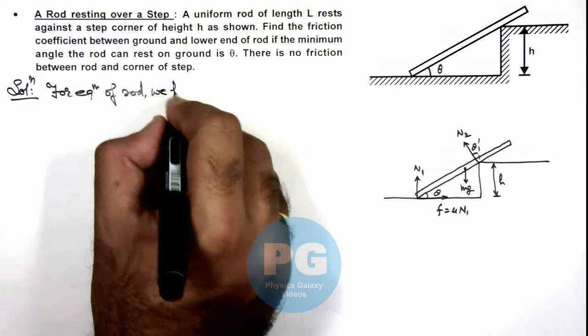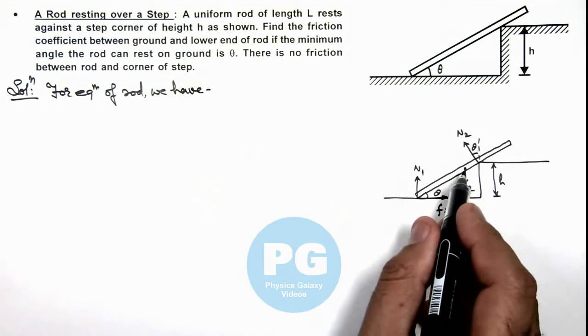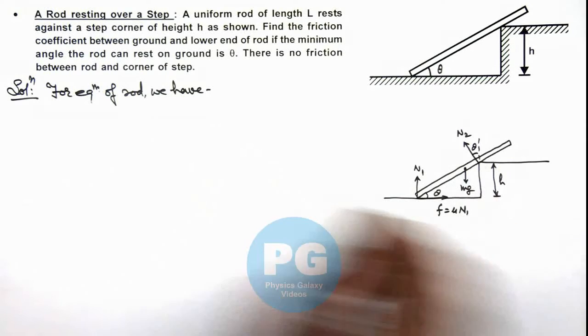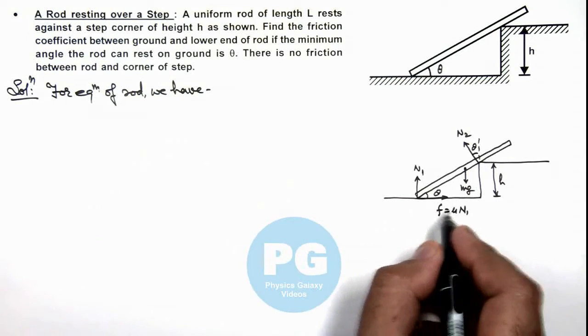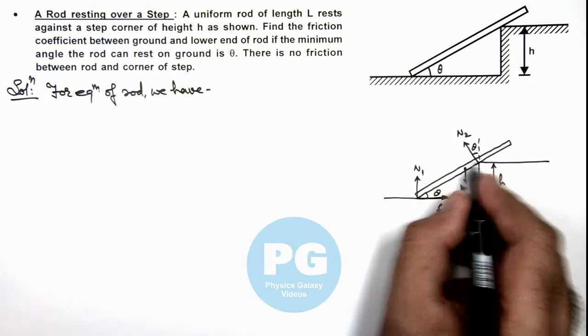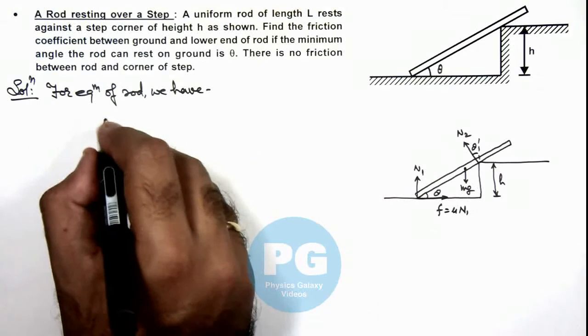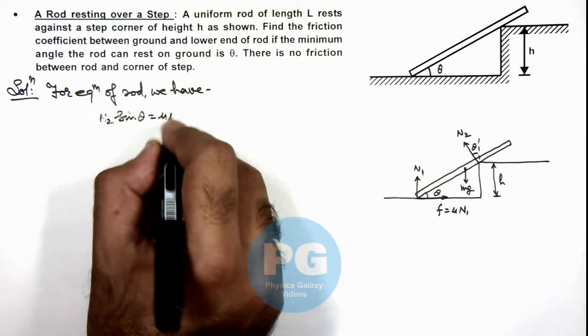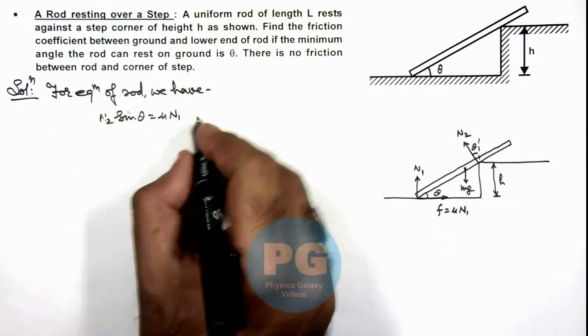We have the equations. If we write in horizontal direction, we can say the value of friction will be balancing the horizontal component of N2, so here we write N2 sin theta is balancing mu N1. Say this is our equation 1.